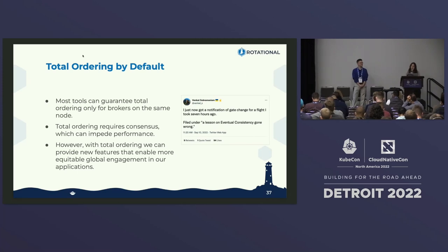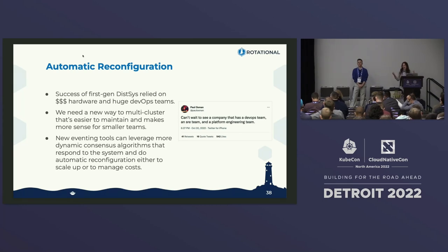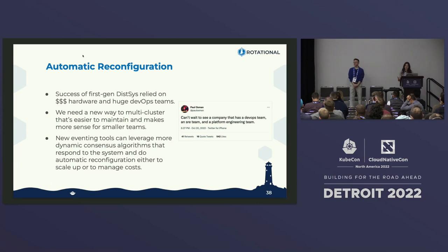But if total ordering were a readily available open source solution, we could guarantee more equitable global engagement with our applications. The last thing — probably most exciting to a Kubernetes audience — is automatic reconfiguration. I'm already hearing those words at this conference. You can't infinitely scale your DevOps team; we need better algorithms that make multi-cluster more realistic for small teams.